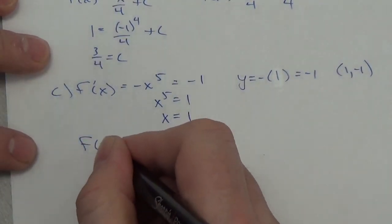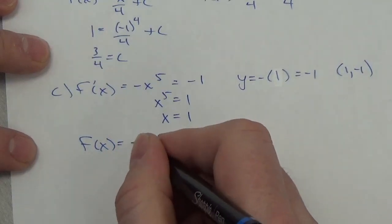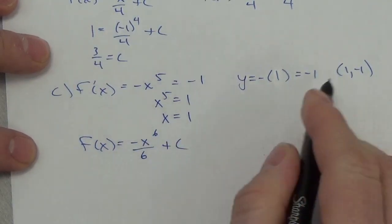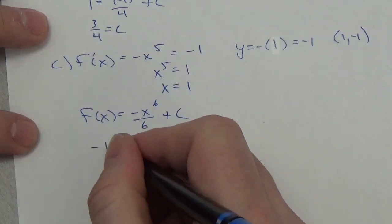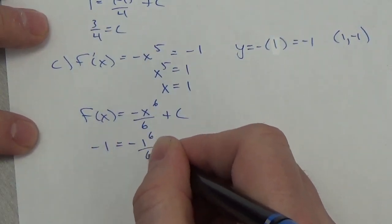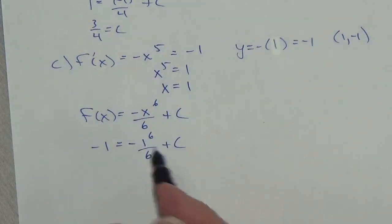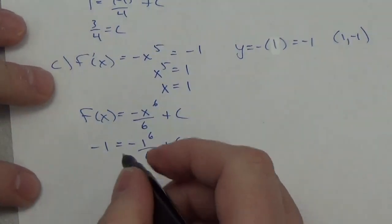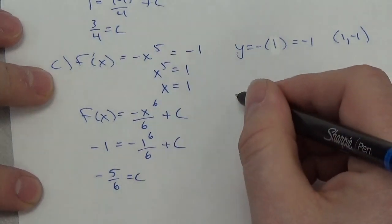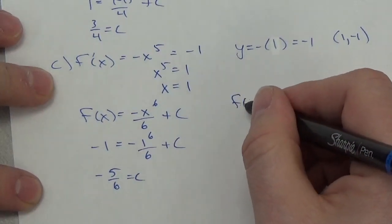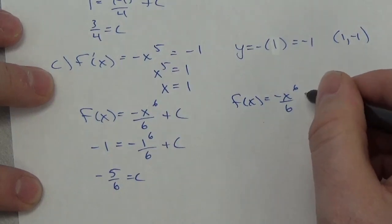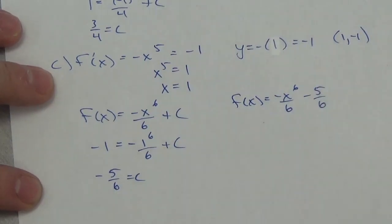I take the antiderivative: that's going to be negative x to the sixth over six plus c. Plug in my boundary condition: negative one equals negative one to the sixth over six plus c. That works out to negative five sixths equal to c. Therefore, F of x is going to be negative x to the sixth over six minus five sixths.